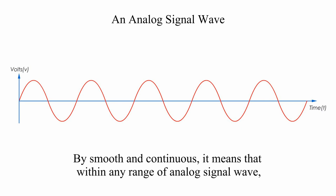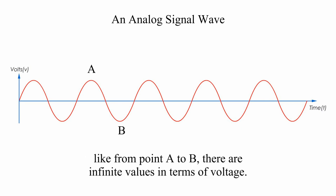By smooth and continuous, it means that within any range of analog signal wave, like from point A to B, there are infinite values in terms of voltage.